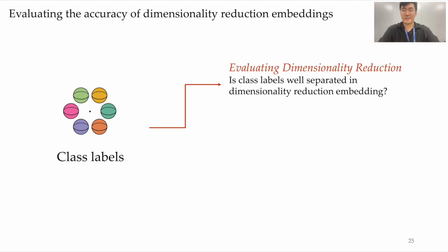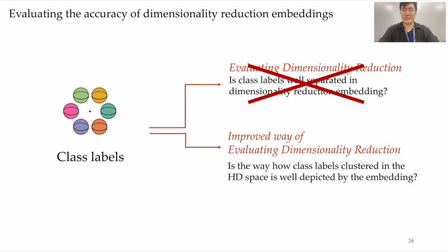We thus wanted to revise the current metrics of using class labels for dimensionality reduction evaluation, which assumes the classes to be ground-truth clusters. Instead of assuming that classes are well-clustered and checking the separation between classes, our new metrics focus on evaluating the extent to which class labels clustered in the original space are well depicted by the embedding. In other words, we praise the embedding that accurately depicts the separation and overlap of classes in the original space.